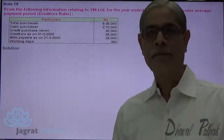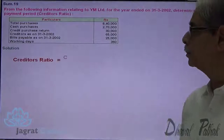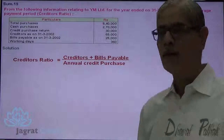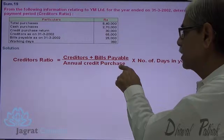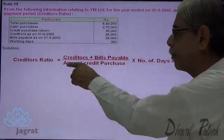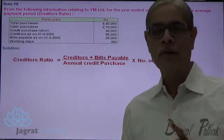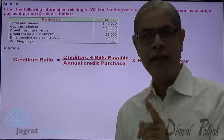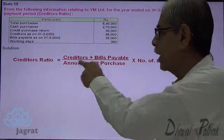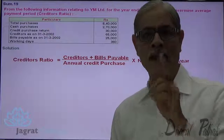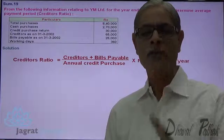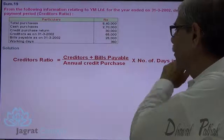To find this out, we have discussed this concept in theory. The formula is: creditors plus bills payable, divided by annual credit purchase, multiplied by number of working days. If we transfer the working days to the denominator, annual credit purchase divided by number of working days gives us average daily credit purchase. So: creditors plus bills payable divided by average daily credit purchase gives the average credit period for payment to suppliers.